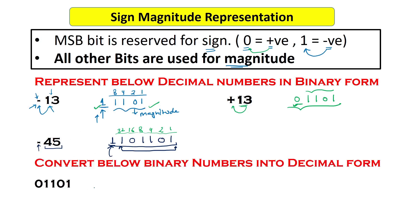Now we do the opposite: converting binary numbers to decimal using sign magnitude representation. In sign magnitude form, the last (MSB) bit tells us the sign and all remaining bits give the magnitude. For 01101, the magnitude bits 1101 equal 8 plus 4 plus 1, which is 13. The sign bit is 0, meaning positive, so this is plus 13.